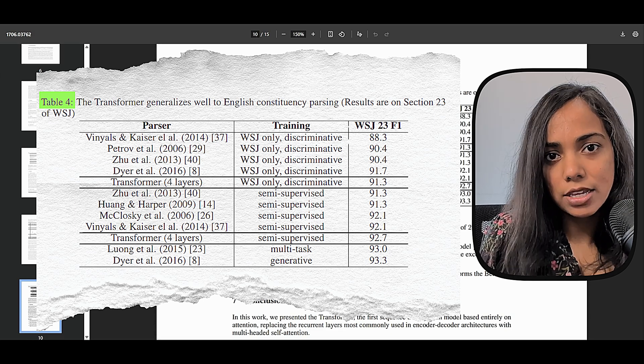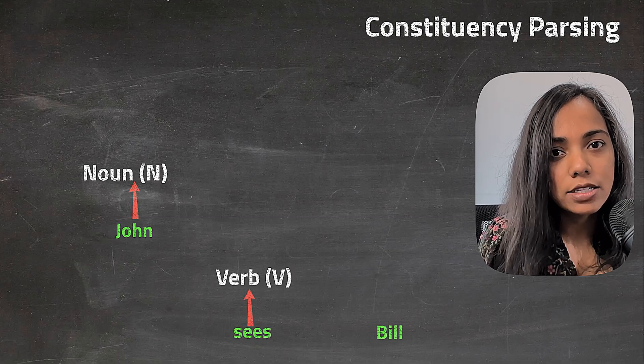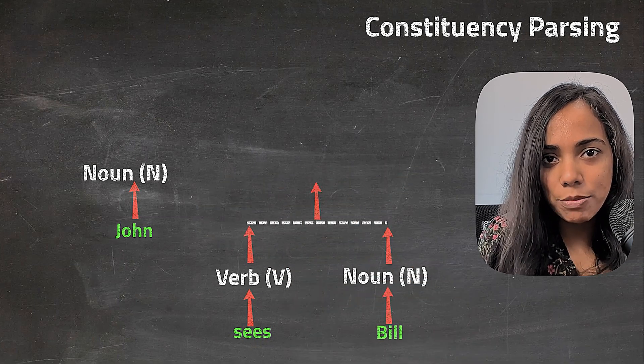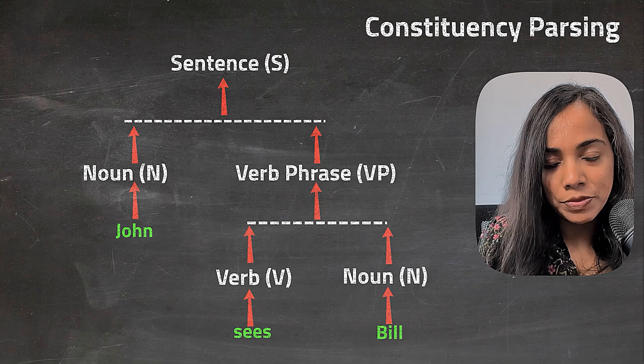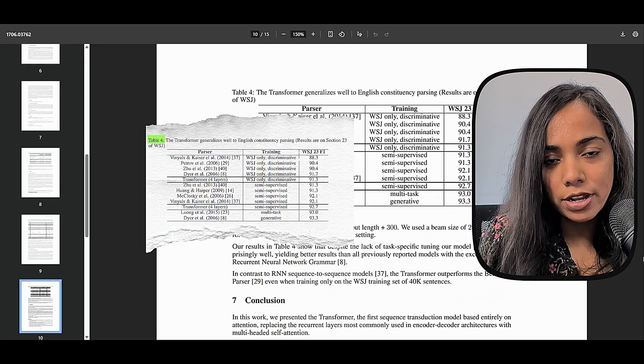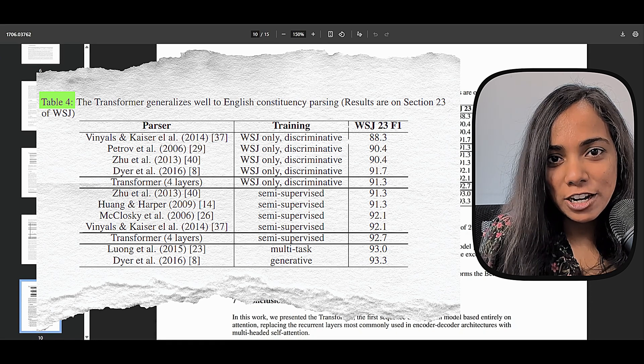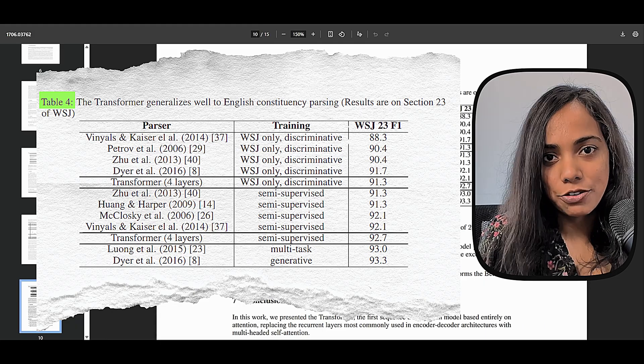Constituency parsing splits a sentence into its grammatical parts, so it really tests the understanding of the sentence structure. Surprisingly, Transformers does very well on this task, even without any special tuning. This is shown in Table 4, in column WSJ 23. This shows that attention alone is enough to capture those core language structures.